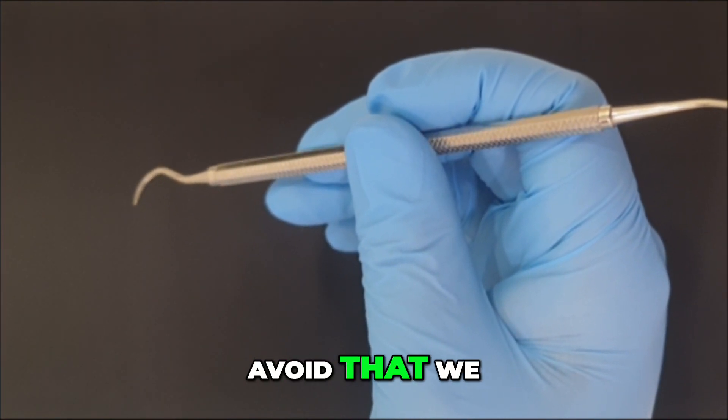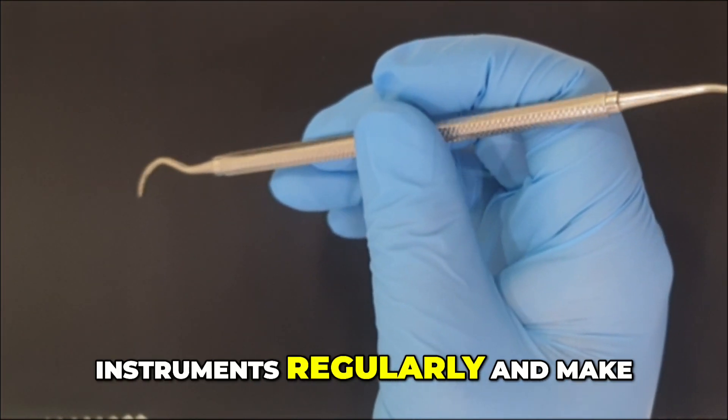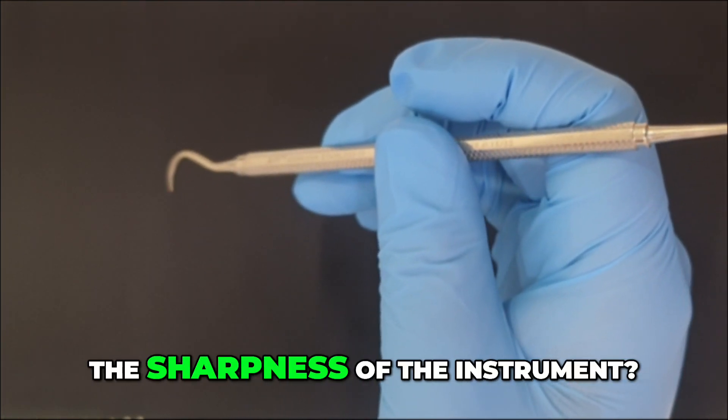So in order to avoid that, we need to sharpen our instruments regularly and make sure it is sharp. How to check for the sharpness of the instrument?